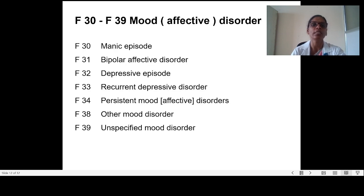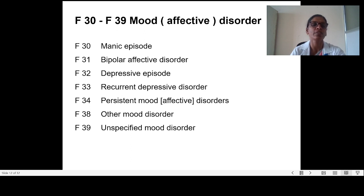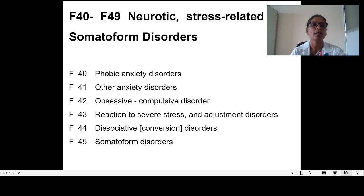F30 to F39 covers mood or affective disorders. F30 is a manic episode, F31 is bipolar affective disorder, F32 is depressive episode, F33 is recurrent depressive disorder, F34 is persistent mood or affective disorders, F38 is other mood disorders, and F39 is unspecified mood disorder.